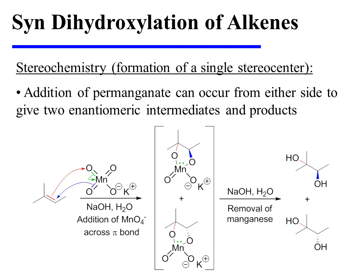Let's first consider an example in which a single stereocenter is formed during the reaction. In this instance, the alkene substrate is treated with potassium permanganate, and the addition of permanganate can occur from either side of the alkene to give two enantiomeric cyclic manganate esters. However, only one of the carbons of the cyclic manganate ester is actually a stereocenter, and the other carbon of the cyclic manganate ester is not drawn using wedges and dashes. When these two cyclic manganate esters are cleaved in aqueous base, the reaction takes place at the manganese center, and therefore there is no change in the stereochemistry that has already been established. The result is two enantiomeric vicinal diol products.